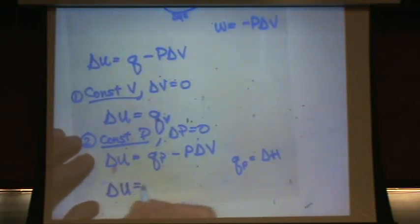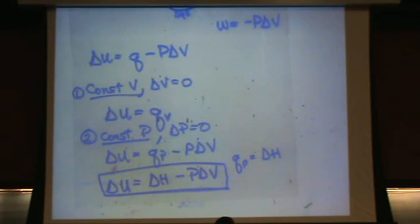So now we just write, you can write this however you want. You can move things around or whatever. This is just the first law written in a different way at constant pressure. Our world tends to be a constant pressure system, so this is normal. It turns out that P delta V is usually a negligible term. So usually internal energy equals enthalpy.